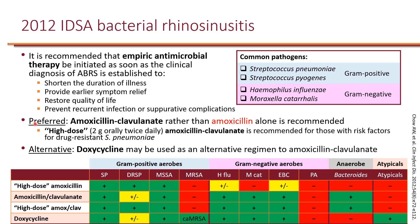The preferred drug of choice for acute bacterial rhinosinusitis is amoxicillin-clavulanate, and that's recommended over amoxicillin alone because H. flu and Moraxella catarrhalis are likely to produce beta-lactamases, which will break down amoxicillin.